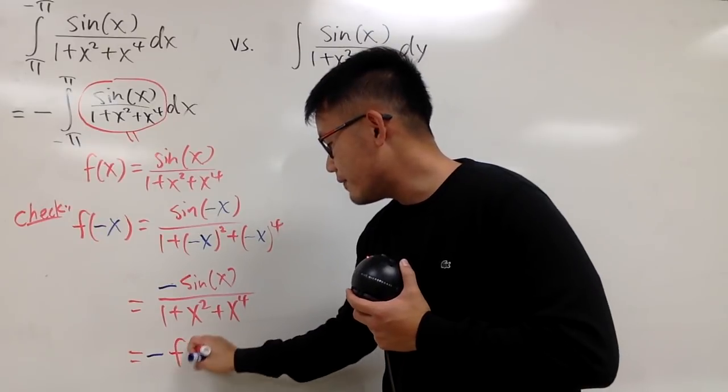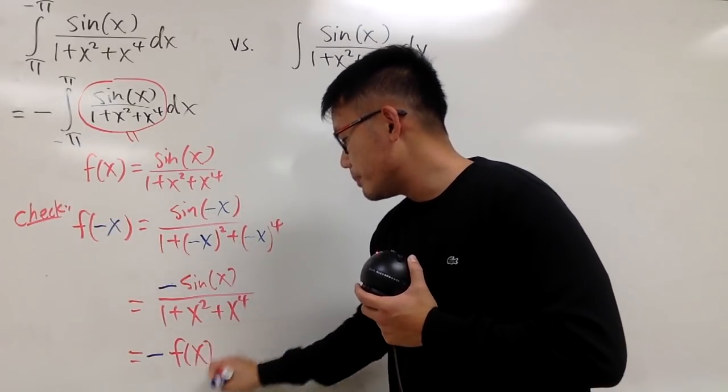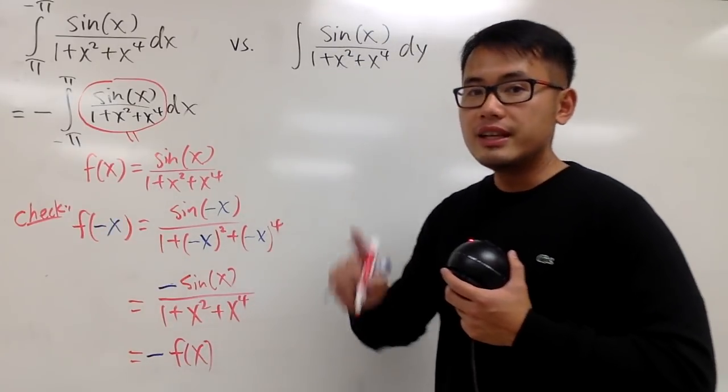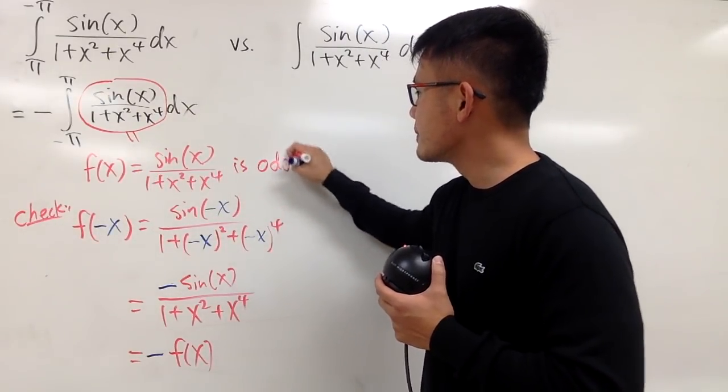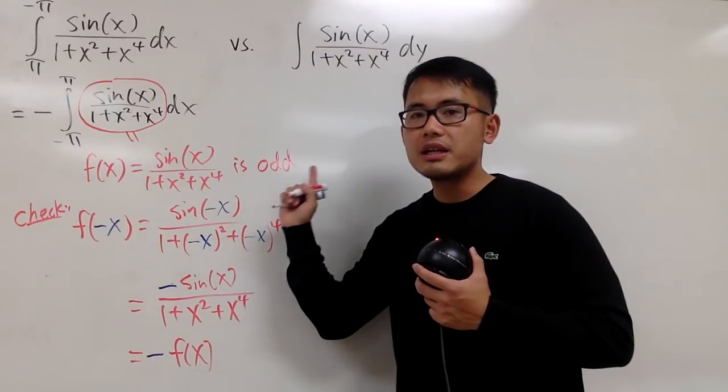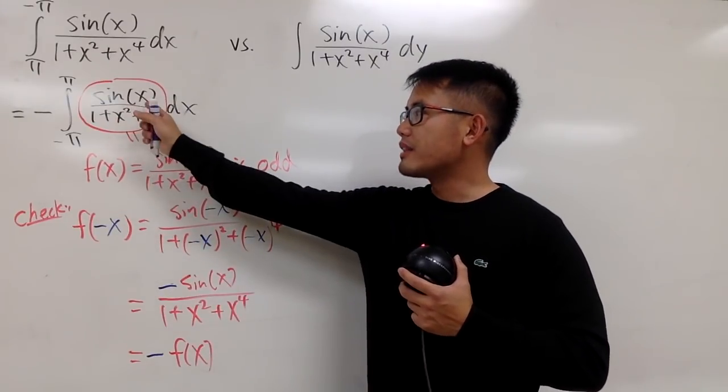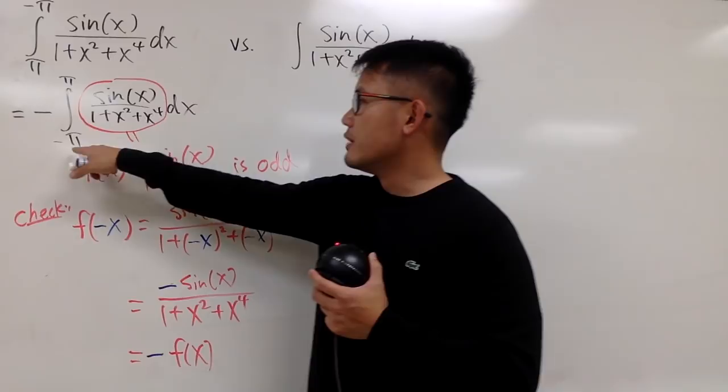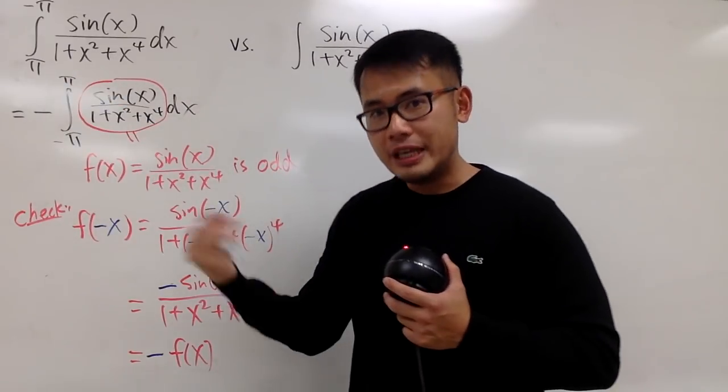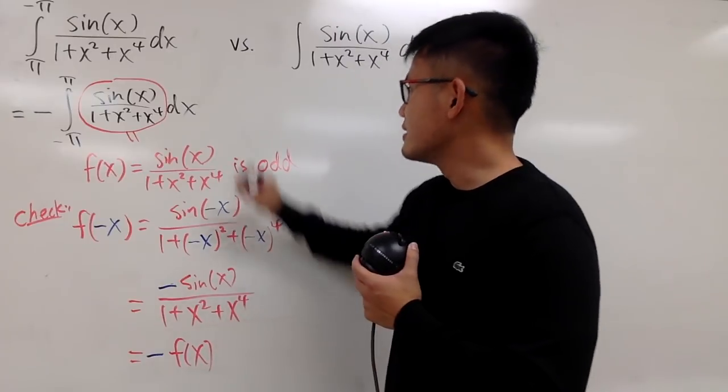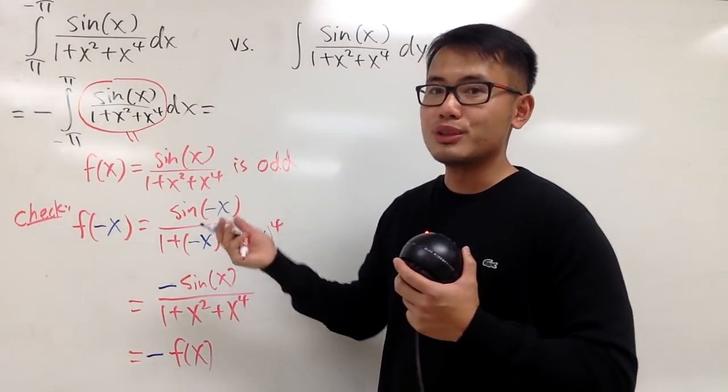So this right here, we have f of negative x being negative f of x. This means this function is odd. This right here is an odd function. So when you integrate an odd function, and if this is the same number, but it's like this is negative version of that, in the end, you get a nice number, and that number is just 0.